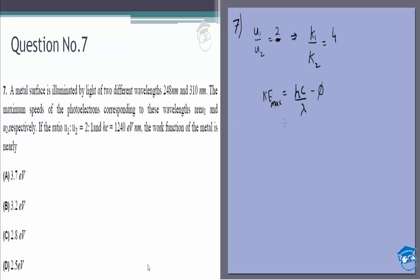And you have the same matter in both cases. So the equation you get is hc, which is 1240, it's given. So 1240 by 248 minus phi divided by 1240 by 310 minus phi is equal to 4.